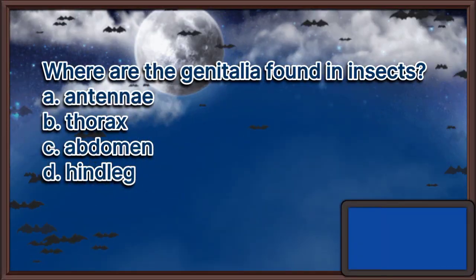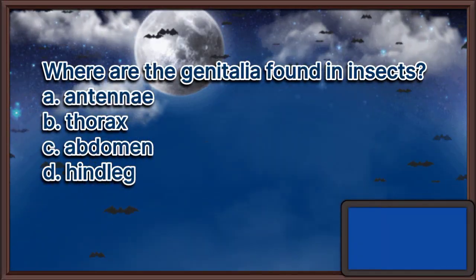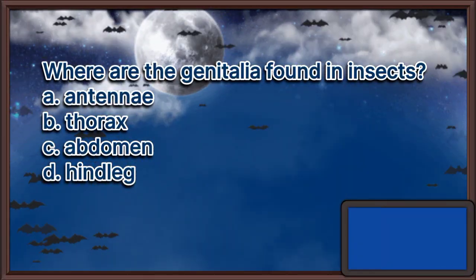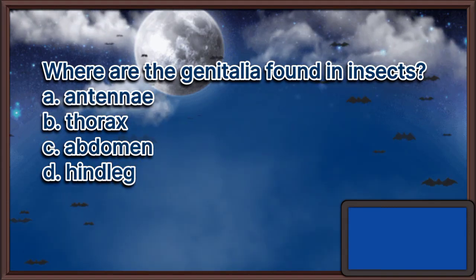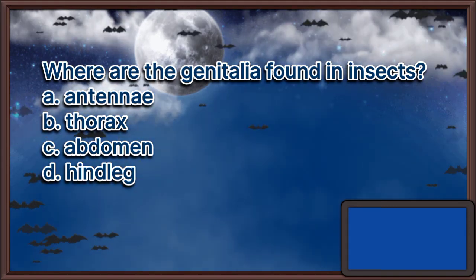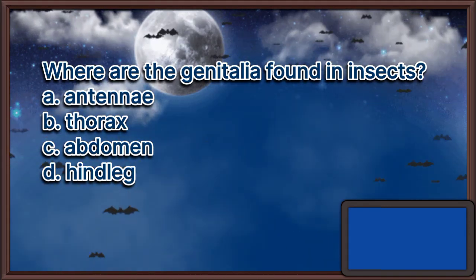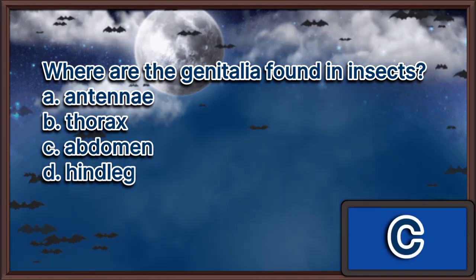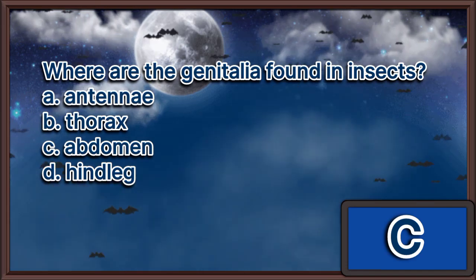Where are the genitalia found in insects? A. Antennae. B. Thorax. C. Abdomen. D. Hind leg. The answer is letter C.